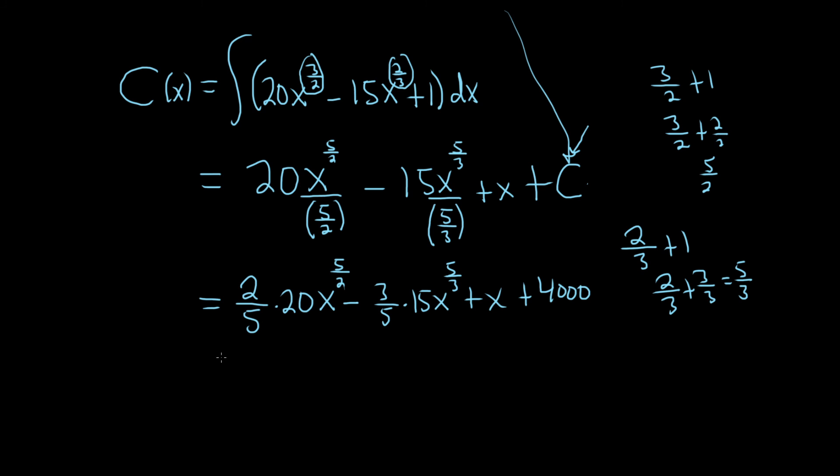So here we can simplify a little bit. Let's see. 5 goes into 20 four times. So you end up with 8x to the 5 halves. 5 goes into 15 three times. So you get minus 9x to the 5 thirds plus x plus 4,000. And this would be the cost function. I hope this video has been helpful.